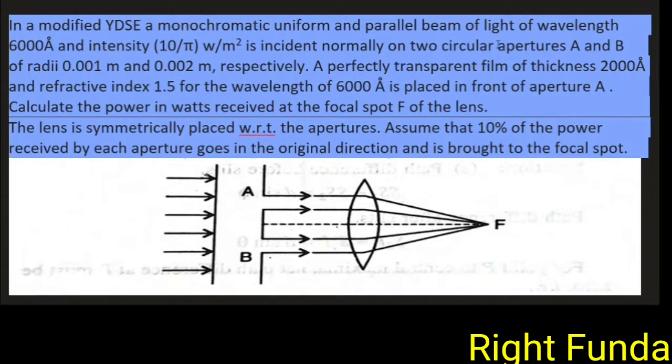In a modified YDSE, that is Young Double Slit Experiment, a monochromatic uniform and parallel beam of light of wavelength 6000 angstrom and intensity 10 by pi watt per meter square is incident normally on two circular apertures A and B of radii 0.001 meter and 0.002 meter respectively.